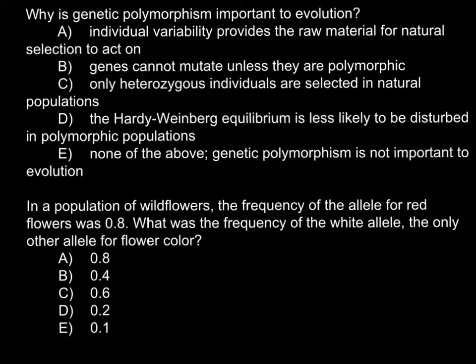Our first question has five answers. Answer A: Individual variability provides the raw material for natural selection to act on. Answer B: Genes cannot mutate unless they are polymorphic. Answer C: Only heterozygous individuals are selected in natural populations. Answer D: The Hardy-Weinberg equilibrium is least likely to be disturbed in polymorphic populations. And answer E: None of the above — genetic polymorphism is not important to evolution.